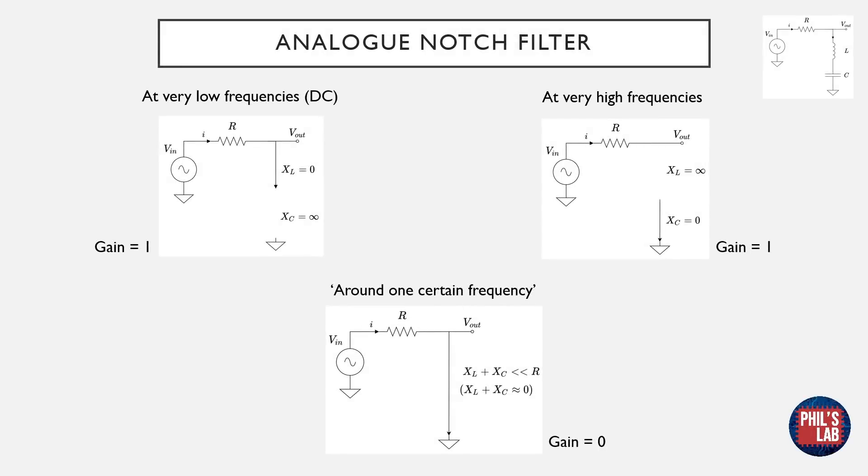Before we get into the maths of this circuit, let's get a brief intuitive understanding of it. Over here, at the very lower frequencies, around DC, the inductor is effectively a short circuit, and the capacitor is an open circuit. Thus there's no load on the resistor, and no voltage is dropped across it. This means that the output voltage is pretty much equal to the input voltage, and we have a filter gain of 1.